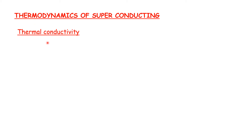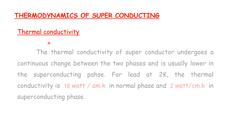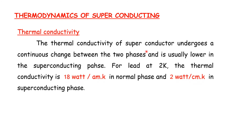Thermal conductivity of a superconductor undergoes a continuous change between the two phases. The change is usually lower in the superconducting phase. For example, for lead at 2 Kelvin, the thermal conductivity is 18 W/cm·K in the normal phase and 2 W/cm·K in the superconducting phase.